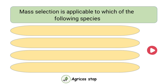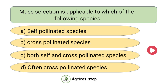Mass selection is applicable to which of the following species? Options are self-pollinated species, cross pollinated species, both self and cross pollinated species, and often cross pollinated species only. The answer is both self and cross pollinated species. Mass selection is applicable to both self and cross pollinated species.